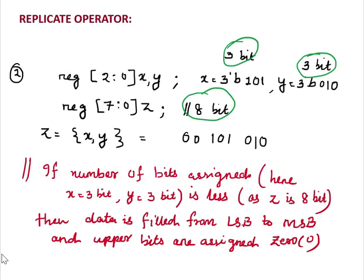See this one. So it is 3-bit data and 3-bit data, but here z is 8-bit data. So what will happen here? If we try to combine these two data, the resultant output will be... see, this is the rule: If number of bits assigned, here x equal to 3 bit and y equal to 3 bit, is less, as z is 8 bit, then data is filled from LSB to MSB and upper bits are assigned zero.